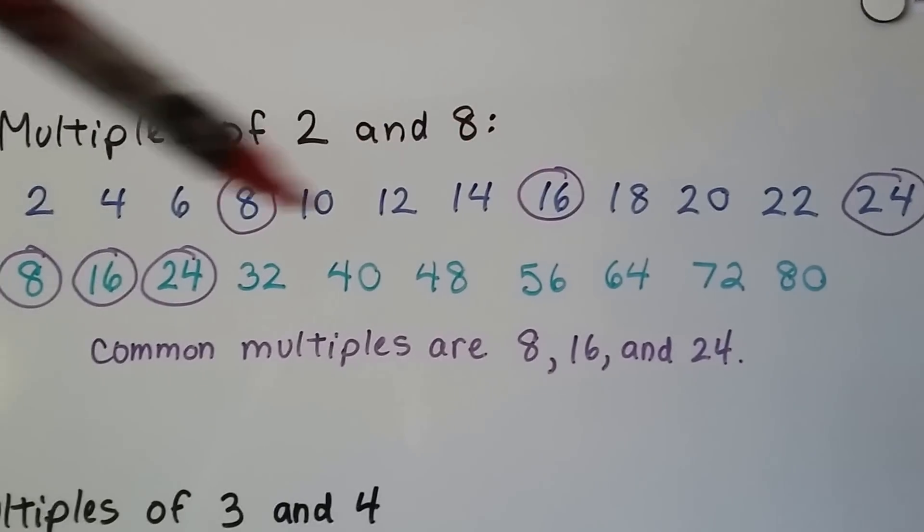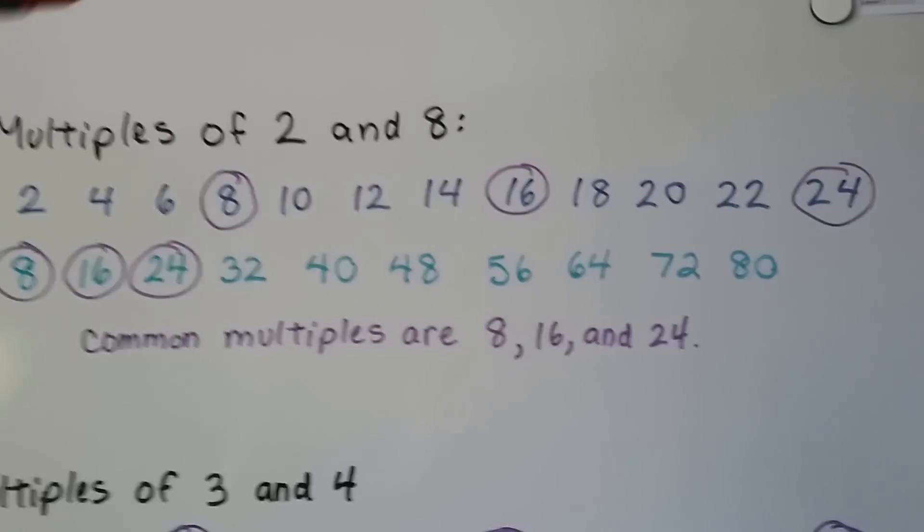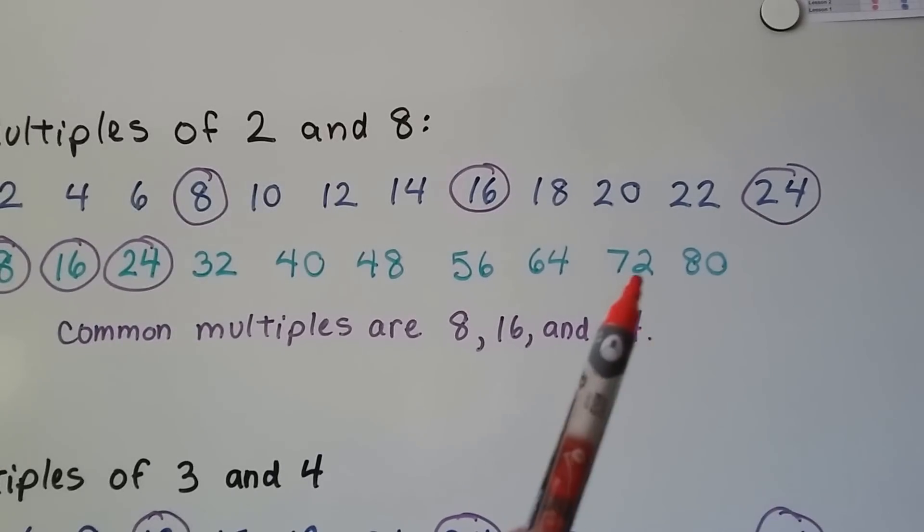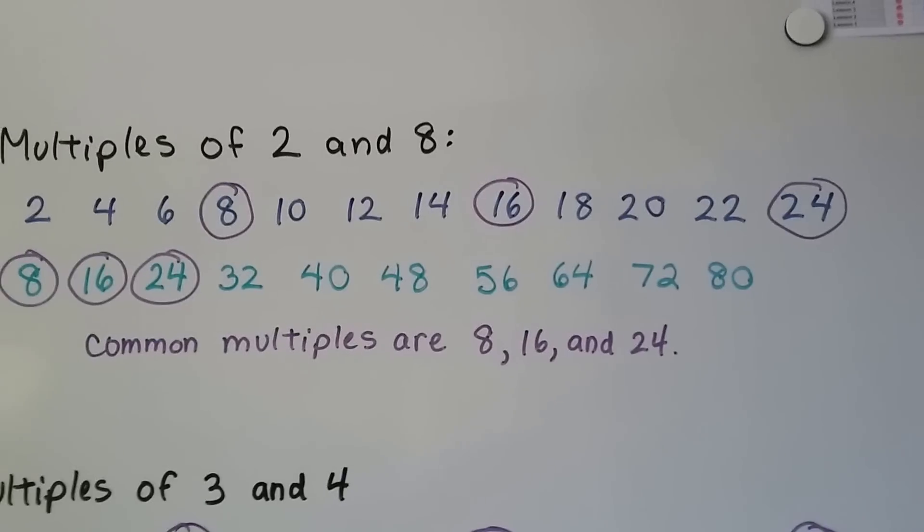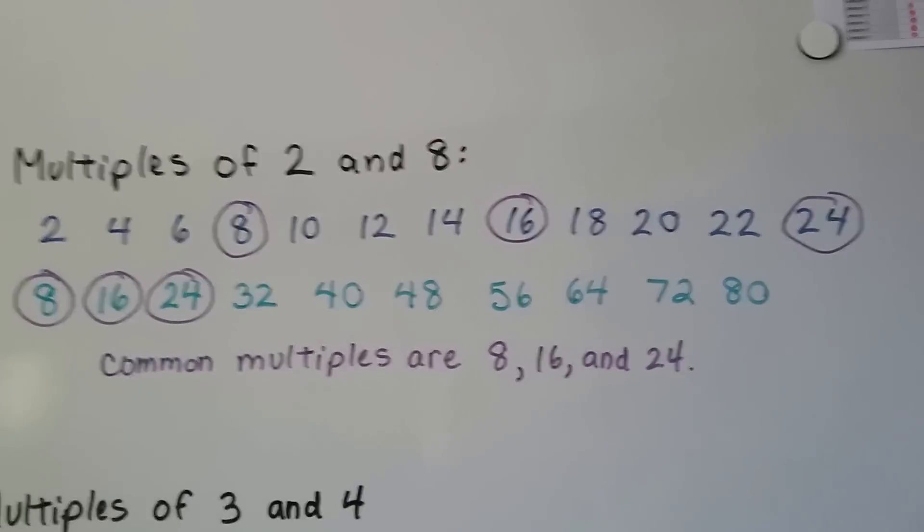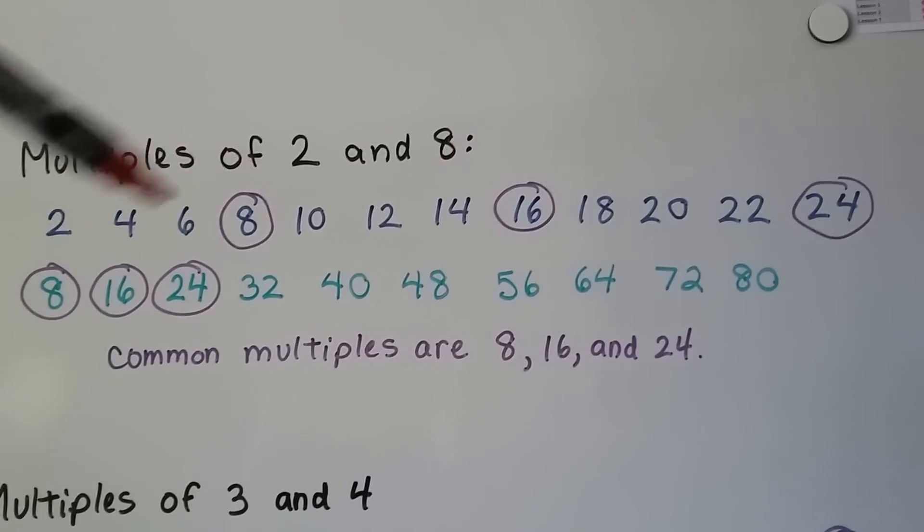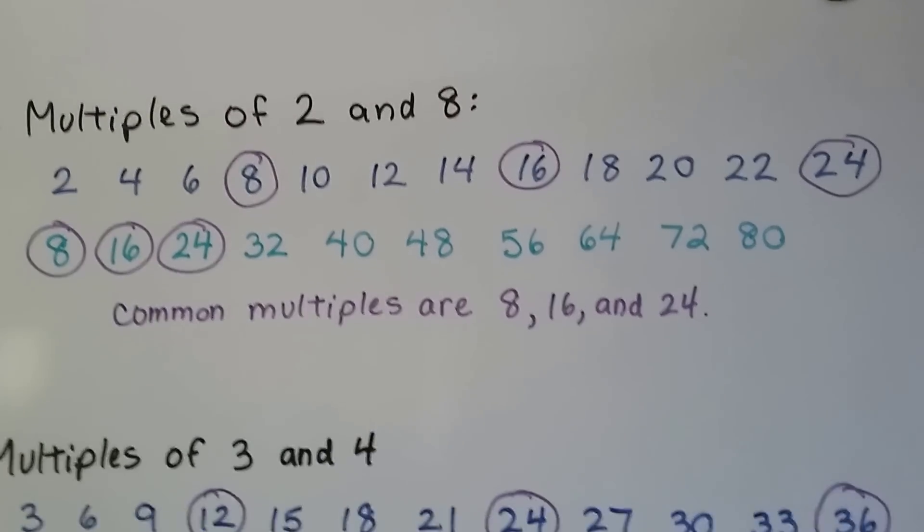And we can figure out and circle the common multiples they have. They both have an 8. They both have a 16. They both have a 24. And we could keep going up and skip counting by 2 here and skip counting by 8 here. And there would be even more they have in common. Usually the most important one is the smallest one they have in common. The least number. That's the important number.